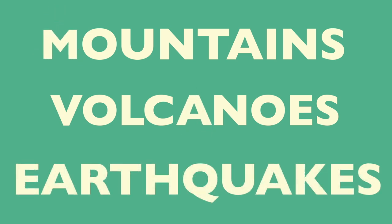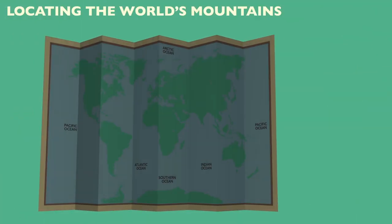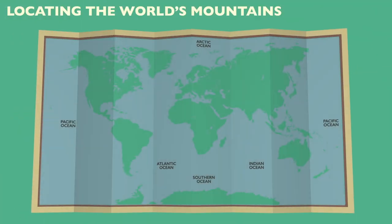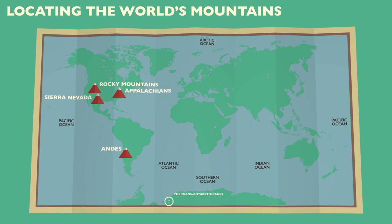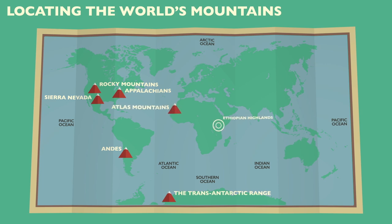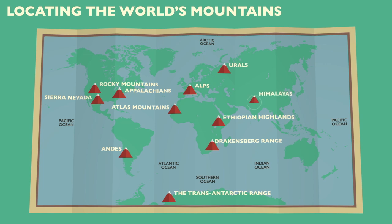Knowing where mountain ranges are located is important. The world's major mountain ranges are the Rocky Mountains, Sierra Nevada, Appalachians, Andes, the Trans-Antarctic Range, Atlas Mountains, Ethiopian Highlands, Drakensberg Range, Alps, Urals, Himalayas, Zagros Mountains, and